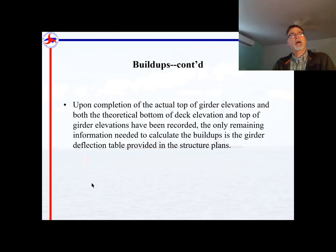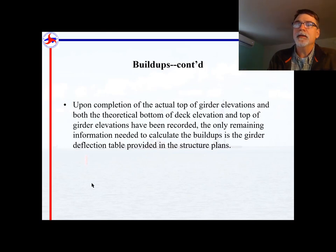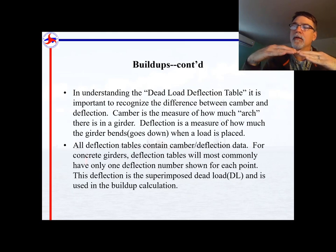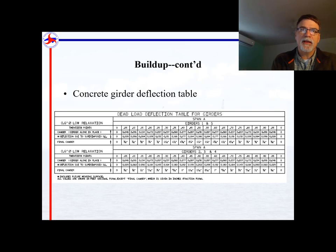After those elevations are shot, we have the theoretical bottom-of-deck elevation and the top-of-girder elevation. The only thing left to figure buildups is the expected deflection, found in the dead load deflection table in the plans. Camber is what is built into the girder; deflection is the downward movement as you load it. The deflection tables tell you how much each girder goes down at your 20th points after loading.